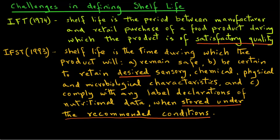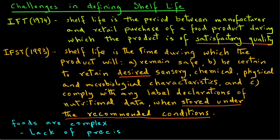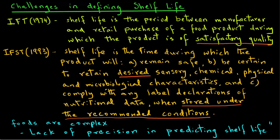This problem can be addressed if the manufacturer has a complete understanding of the product and how it will deteriorate under different environmental conditions. In most cases, food products tend to be complex and therefore such knowledge is not readily available. The lack of information about the deteriorative mechanisms of complex foods causes lack of precision in predicting shelf life. We will examine some of these issues in more detail and see how we can build some precision into shelf life studies in the following tutorials.